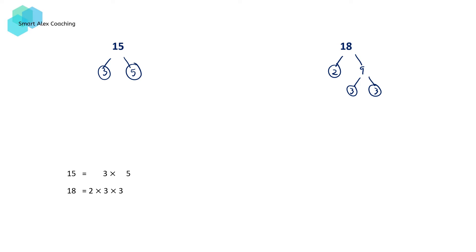Unlike finding the HCF where we only take the common factors, what we do here is we need to take all the factors. So here we're going to take 2, we're going to take 3, this 3 as well, as well as this 5. So the LCM of 15 and 18 is going to be given by 2 times 3 times 3 times 5, which is equal to 90. And this is the same result as when we obtain the LCM by writing out all the multiples of 15 and 18.